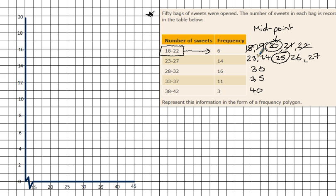So that's my graph. I know that my first data point needs to be a midpoint of 20 and the frequency is 6, so I'm going to draw a point here. My next group, the frequency is 14 at the midpoint 25 there.